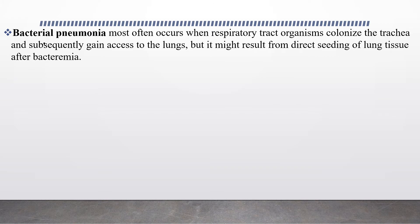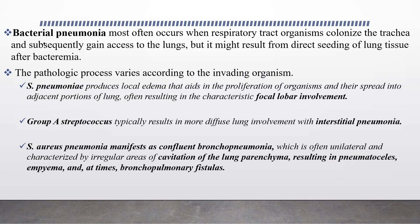Bacterial pneumonia most often occurs when respiratory tract organisms colonize the trachea and subsequently gain access to the lungs, but it might result from direct seeding of lung tissue after bacteremia. The pathologic process varies according to the invading organism. Streptococcus pneumoniae produces local edema that aids in the proliferation of organisms and their spread to adjacent portions of the lung, often resulting in characteristic focal lobar involvement or lobar pneumonia. Group A Streptococcus typically results in more diffuse lung involvement with interstitial pneumonia.